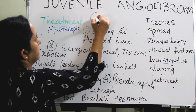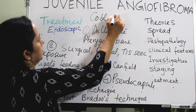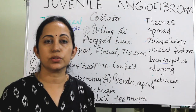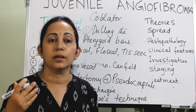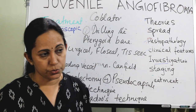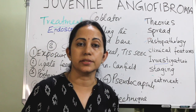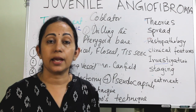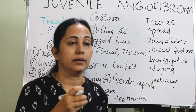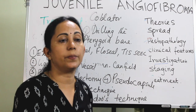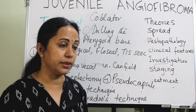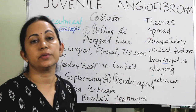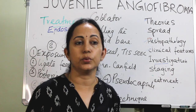A coblator can also be used — it is a plasma-based device that causes surface coagulation of the tumor without collateral thermal damage, shrinking tumor size and reducing intraoperative blood loss. You must discuss the procedure with the patient, and informed consent must include consent for converting the endoscopic approach to an open approach at any time during surgery.